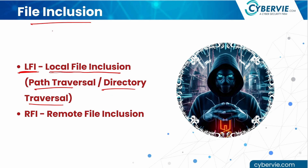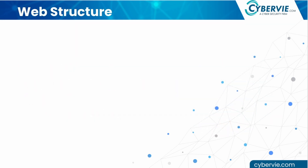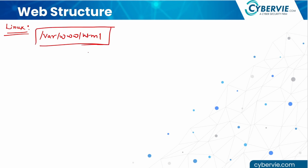The second part of file inclusion is RFI, called remote file inclusion. In this video we will first cover LFI then proceed with RFI. Before understanding LFI, we need to understand the web structure. Suppose we have a Linux server hosting a website — in the Linux file system there is a folder called /var/www/html, and all web files are kept inside that folder. We can also run 'apache2 start' to start the web service.